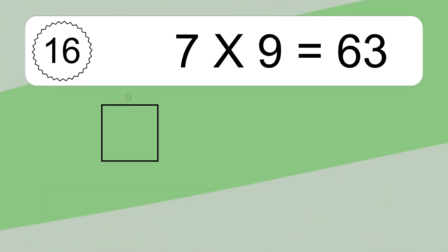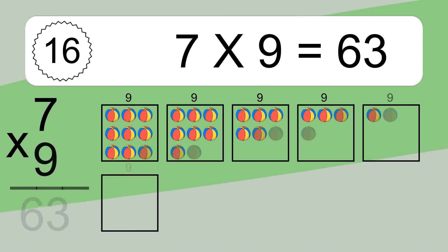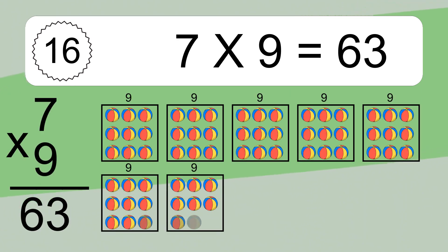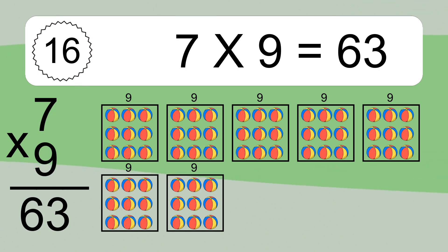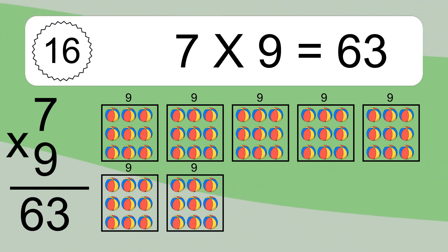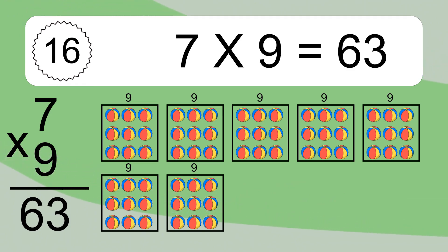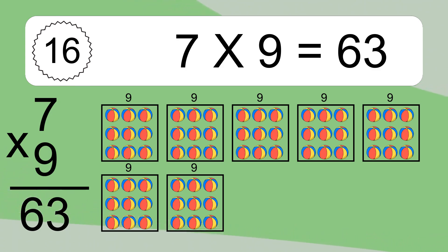7 times 9 equals 63. We have 7 boxes, and each box has 9 colorful balls inside. If you count all the balls in all the boxes together, you will have 7 times 9 balls. This equals 63 balls.